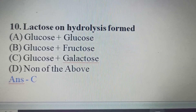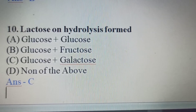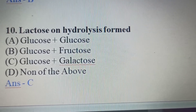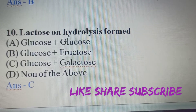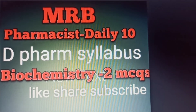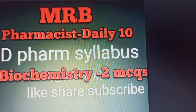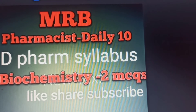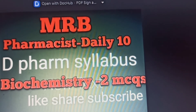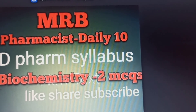Tenth Question: Lactose on hydrolysis forms — A) Glucose plus glucose, B) Glucose plus fructose, C) Glucose plus galactose, D) None of the above. Lactose on hydrolysis gives glucose plus galactose. Option C is the correct answer. Thank you so much for watching.